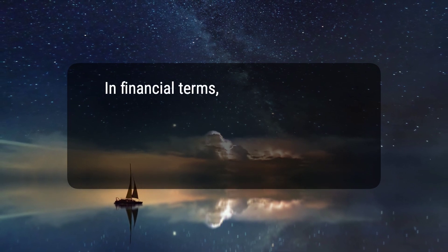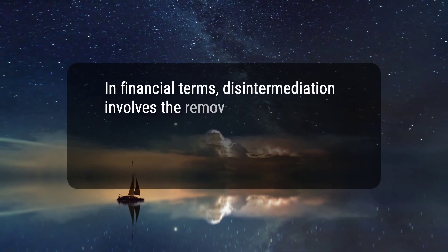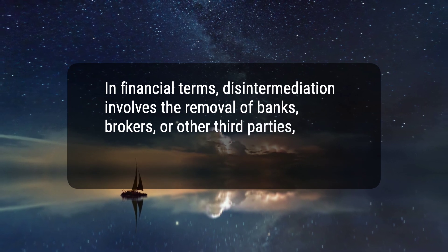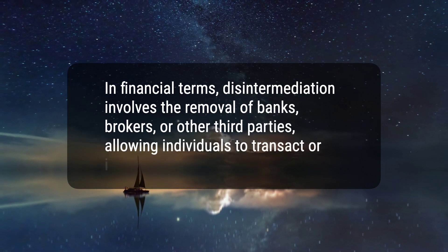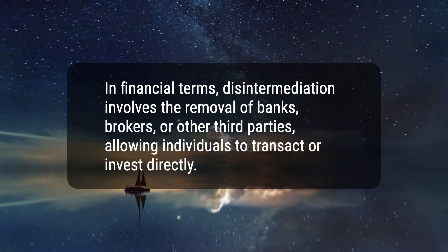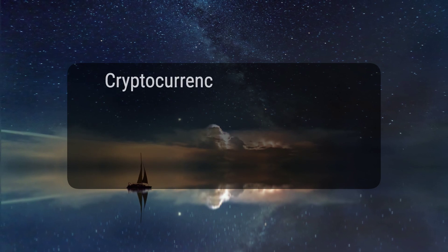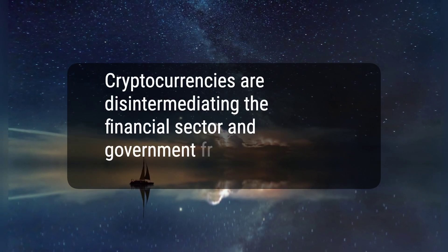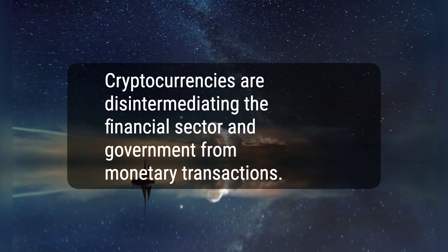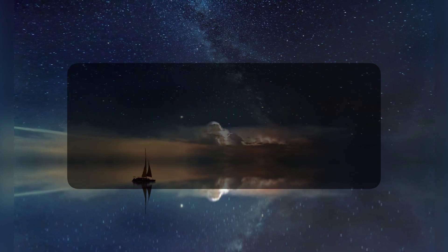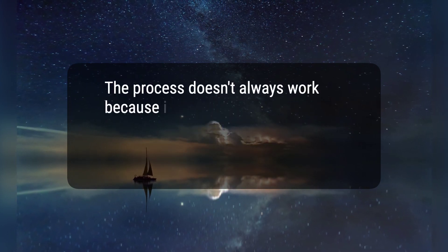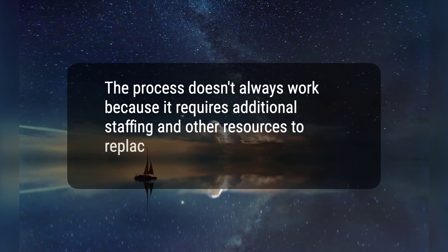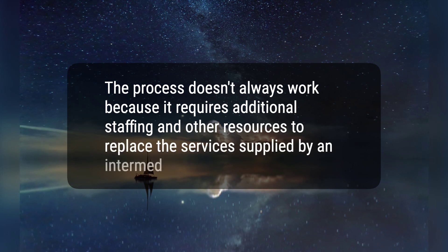Three: in financial terms, disintermediation involves the removal of banks, brokers, or other third parties, allowing individuals to transact or invest directly. Four: cryptocurrencies are disintermediating the financial sector and government from monetary transactions. Five: the process doesn't always work because it requires additional staffing and other resources to replace the services supplied by an intermediary.